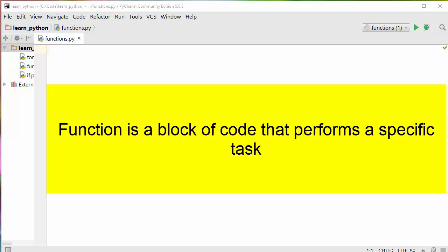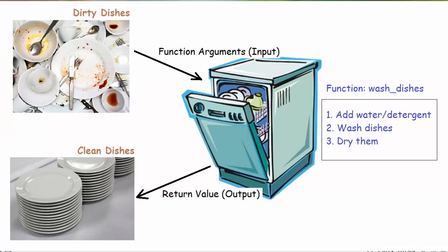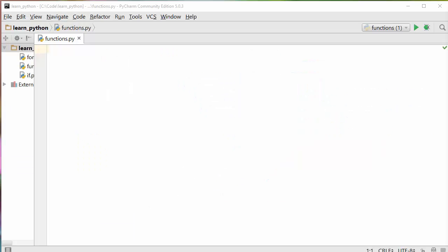Functions are nothing but a block of code that performs a specific task. Think about them as being a dishwasher. The way a dishwasher works is you give dirty dishes as an input; when you press the button, internally it performs tasks such as adding detergent and water, cleaning the dishes, and drying them out. In the end, what you get is clean dishes as an output. Functions are also similar — they take something as input, perform some tasks, and return something as output.